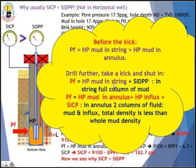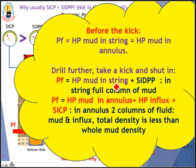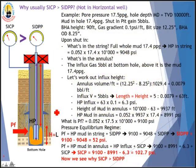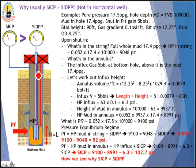You may ask: why is shut-in casing pressure usually greater than shut-in drillpipe pressure? Before the kick, formation pressure equals or is slightly greater than the hydrostatic pressure of the mud in the wellbore. Once the well takes a kick and is shut in, it becomes a closed system between the formation and the wellbore. The wellbore has two parts: inside the drill string, and the annulus.